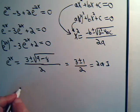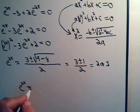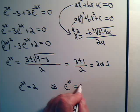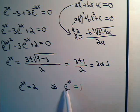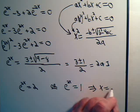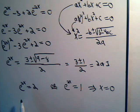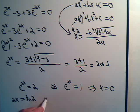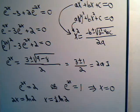So e^(2x) may equal 2 or e^(2x) equals 1. Since any number to the 0 power is 1, e^(2x) = 1 implies x = 0. For e^(2x) = 2, taking the natural log of both sides gives 2x = ln(2), so x = (1/2)ln(2). We get two values for x.